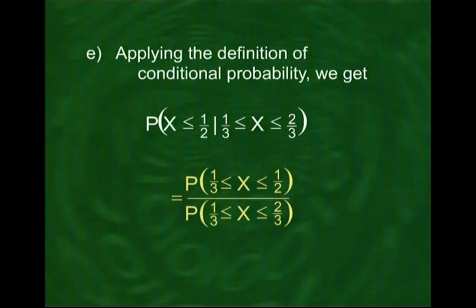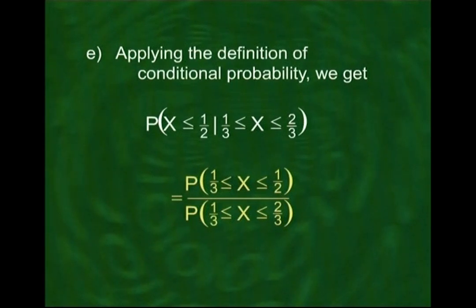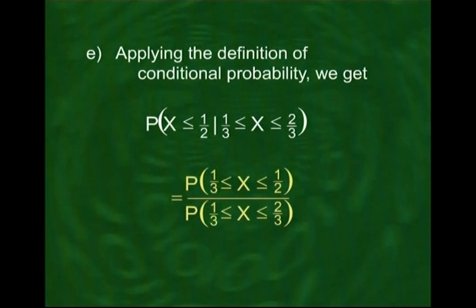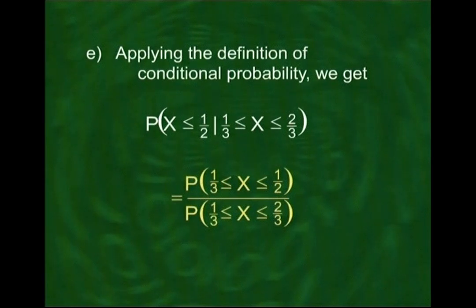Students, ye dono baatein ek waqt mein kis tarah se ho sakti hain? If you consider the range x lying between 1/3 and 1/2, you will realize that both these requirements are being fulfilled. If x is lying between 1/3 and 1/2, then x is less than 1/2 and x is also somewhere between 1/3 and 2/3. So both of those events are occurring simultaneously.